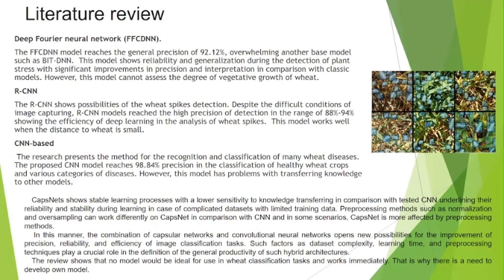Most models demonstrate good precision but have some shortcomings or are not fully suitable for the tasks. Some models are not open for use or have no open architecture. Some have problems with learning parameter transfer and some work with other types of images. The review showed that no model would be ideal for wheat classification tasks and ready for immediate use.